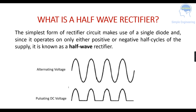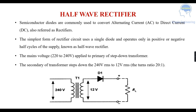So what is a half-wave rectifier? A rectifier converts AC to DC. The simplest form of rectifier circuit makes use of a single diode and it operates in either the positive or negative half-cycle of the supply. You can see an alternating voltage input and a pulsating DC output.